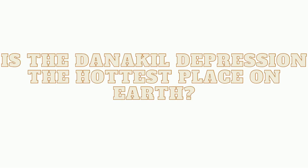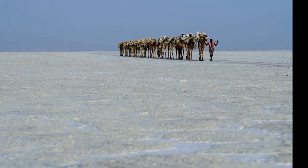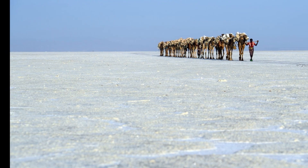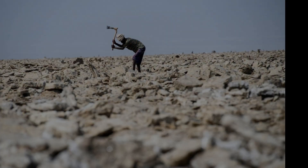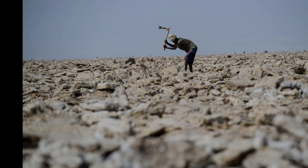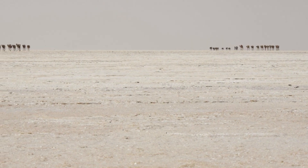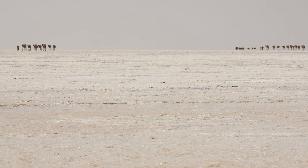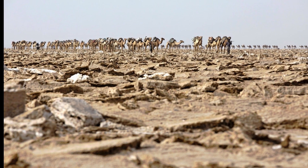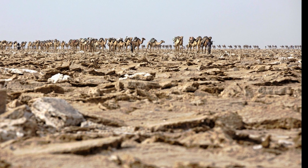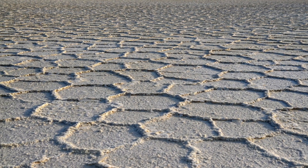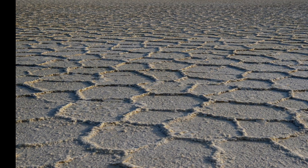Is the Danakil Depression the hottest place on Earth? The Danakil Depression is the hottest place on Earth as measured by average annual temperatures. It is also one of the lowest land destinations on Earth, at over 100 meters below sea level. Average temperatures sit between 35 and 40 degrees Celsius annually, and the region sees no more than 100 to 200 millimeters of rainfall each year, all of which evaporates immediately under the extreme heat.